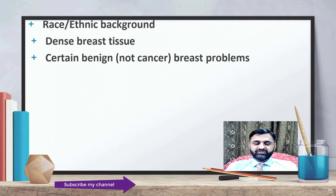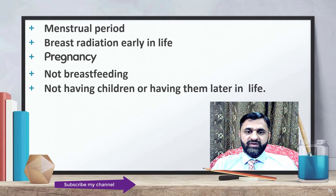Overall, white women are slightly more likely to get breast cancer than African American women. Dense breast tissue — with more glands and less fatty tissue — increases the likelihood of developing breast cancer. Women with certain benign breast changes, usually with atypical hyperplasia, may have increased risk. Women who have menarche before age 12 or menopause after age 55 are at higher risk. Women who received radiation to the chest area as a child or young adult have a greatly increased risk.